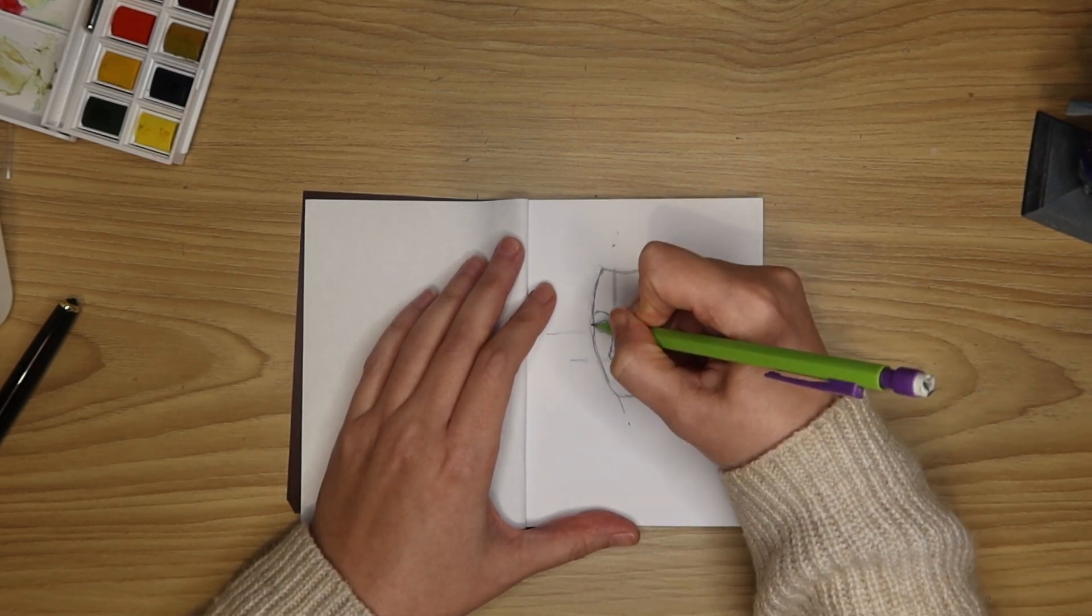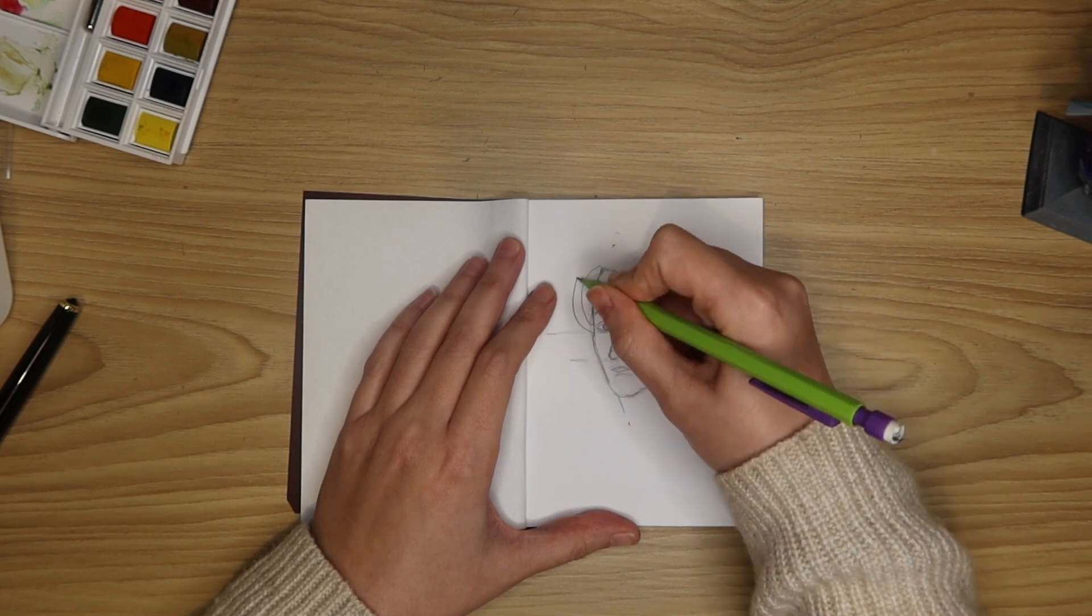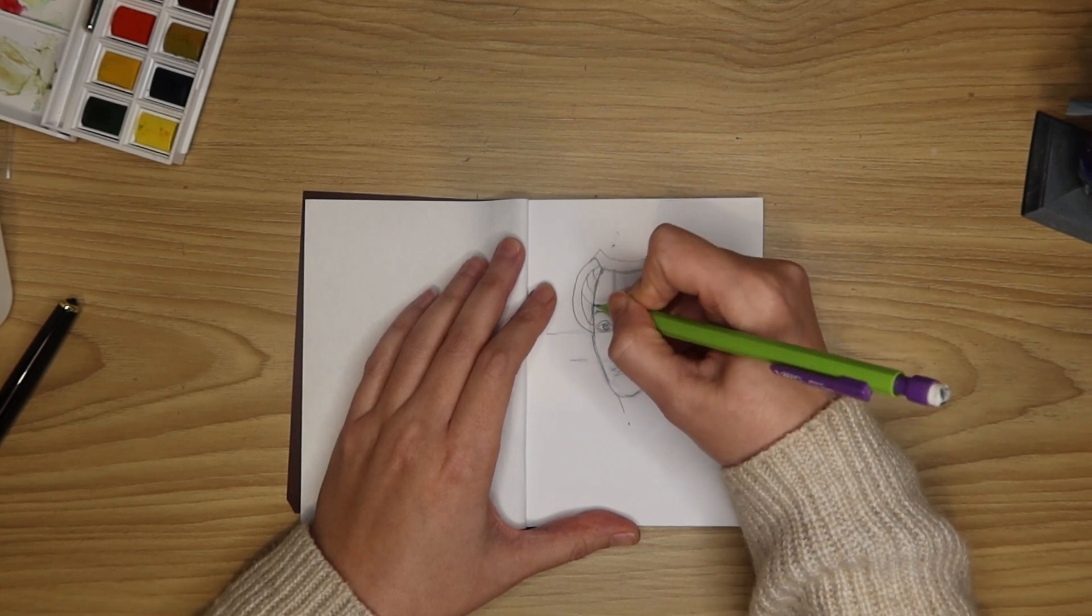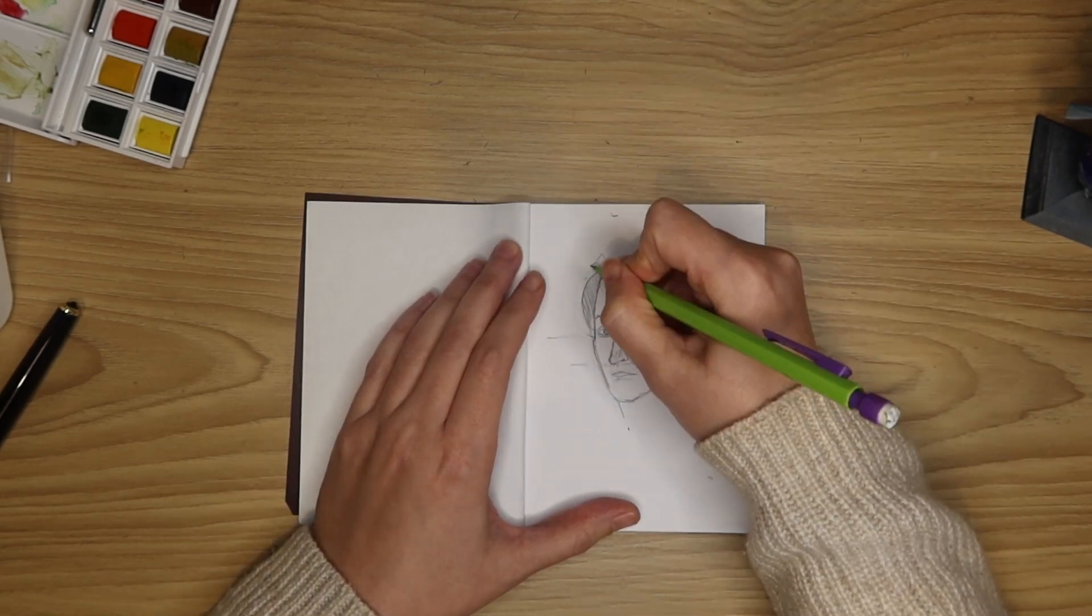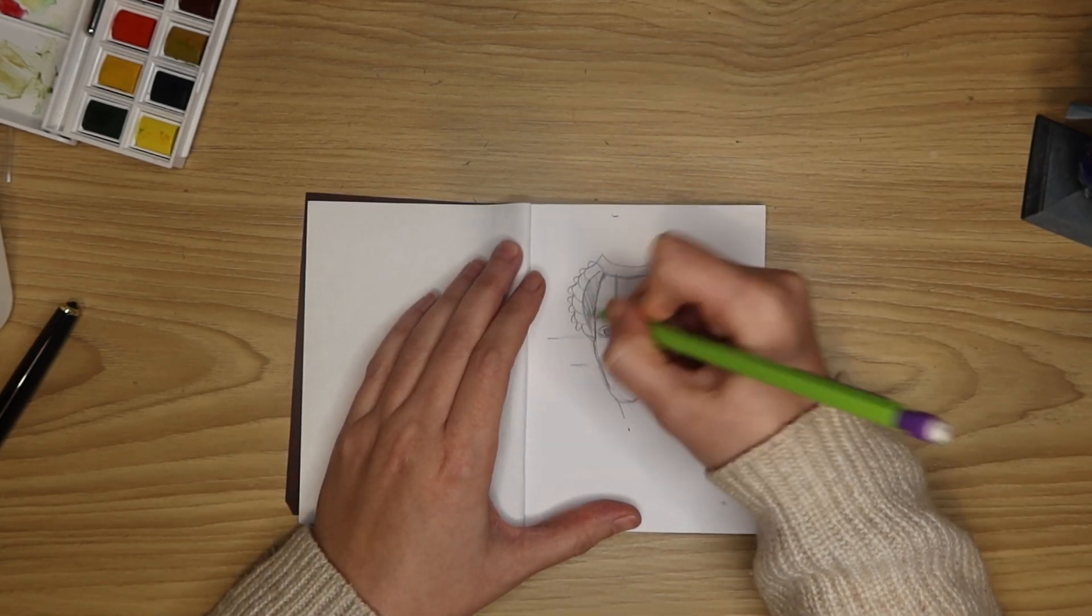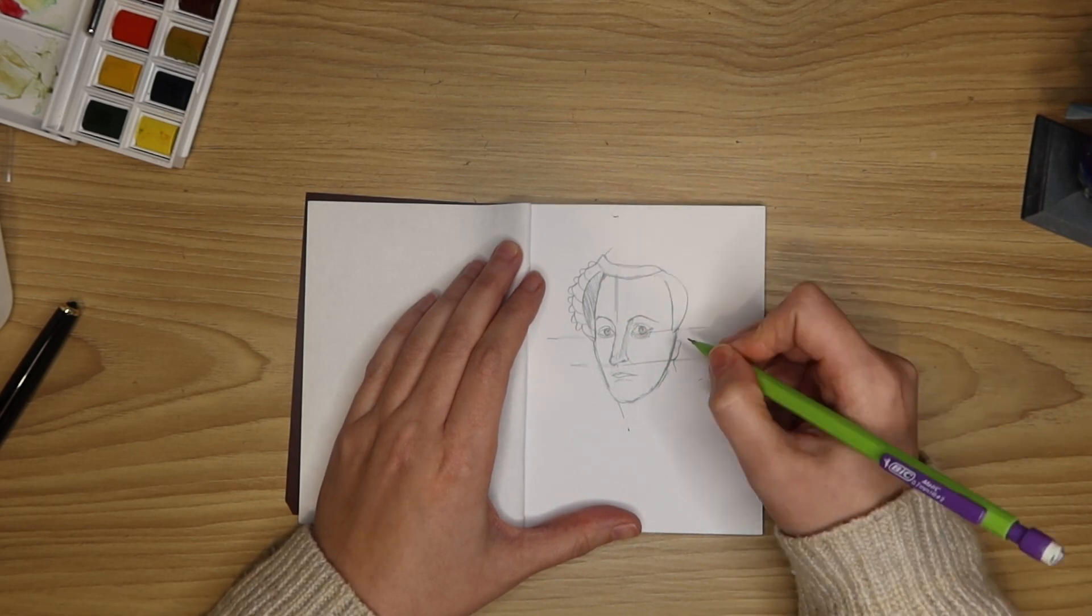When I'm trying to settle on an idea I like to sketch as it helps me collect my thoughts. Doing this also helps me understand the direction I want to go in. The sketch that I'm doing now is of Mary Stuart or Mary Queen of Scots.